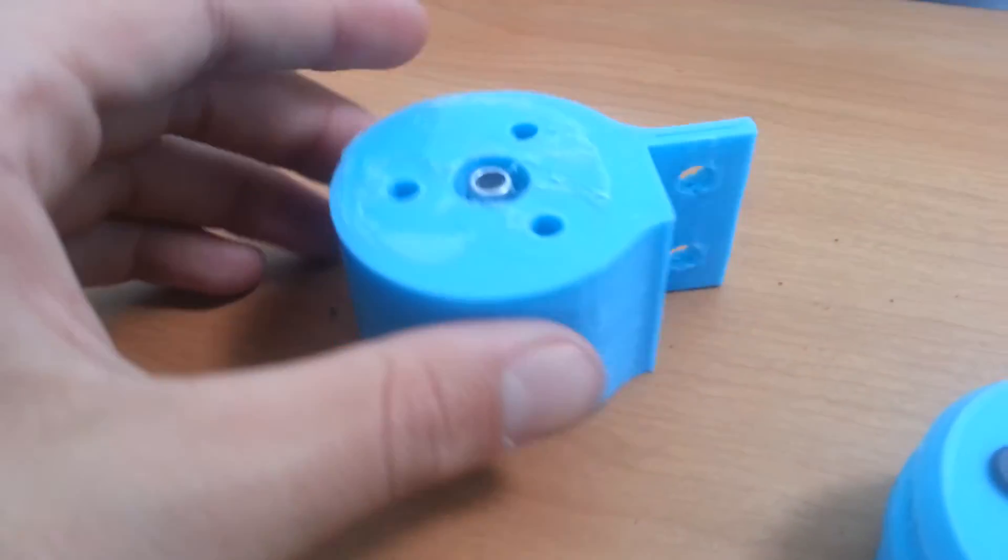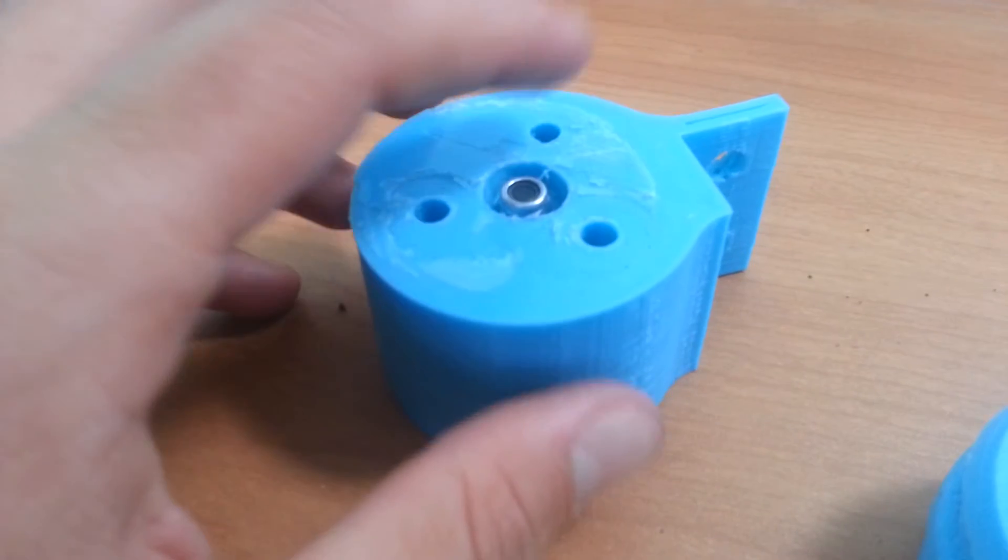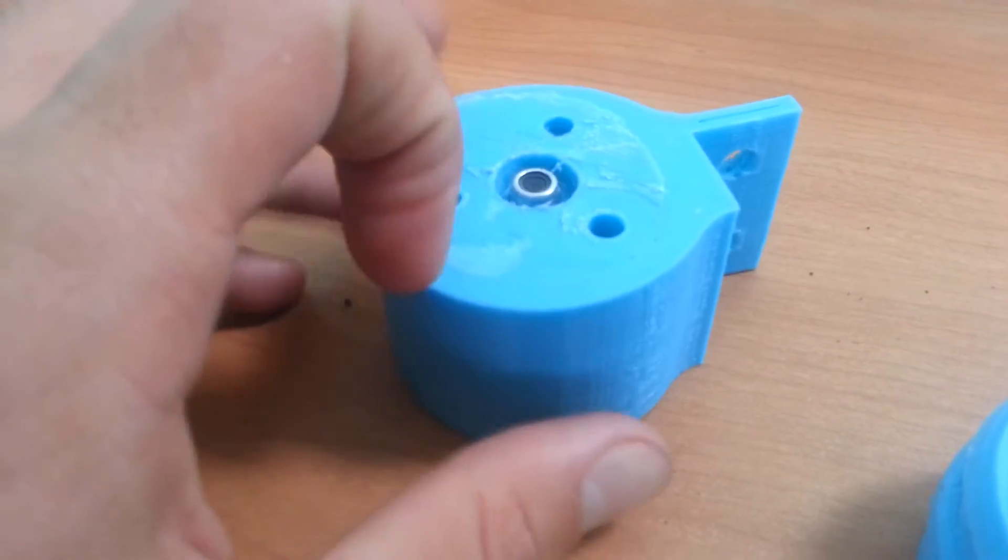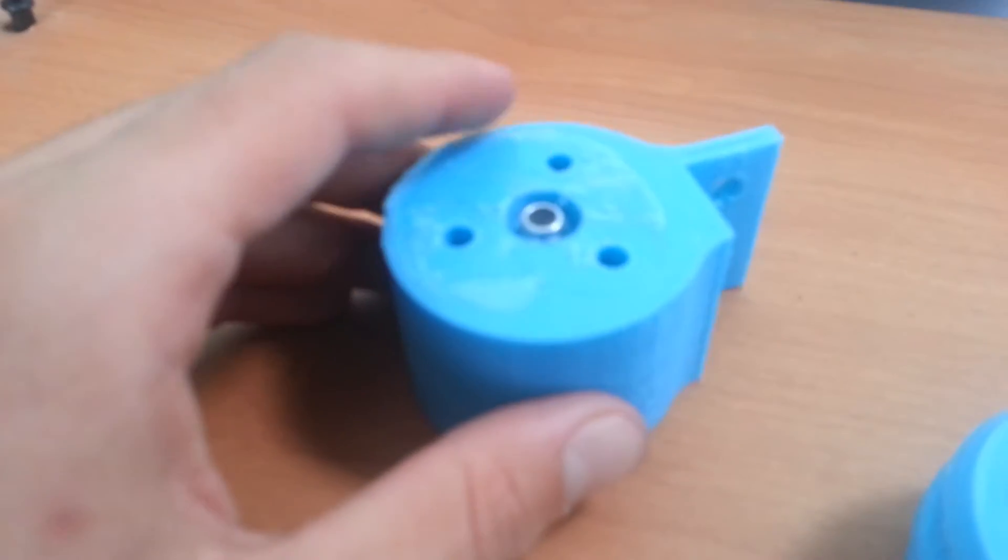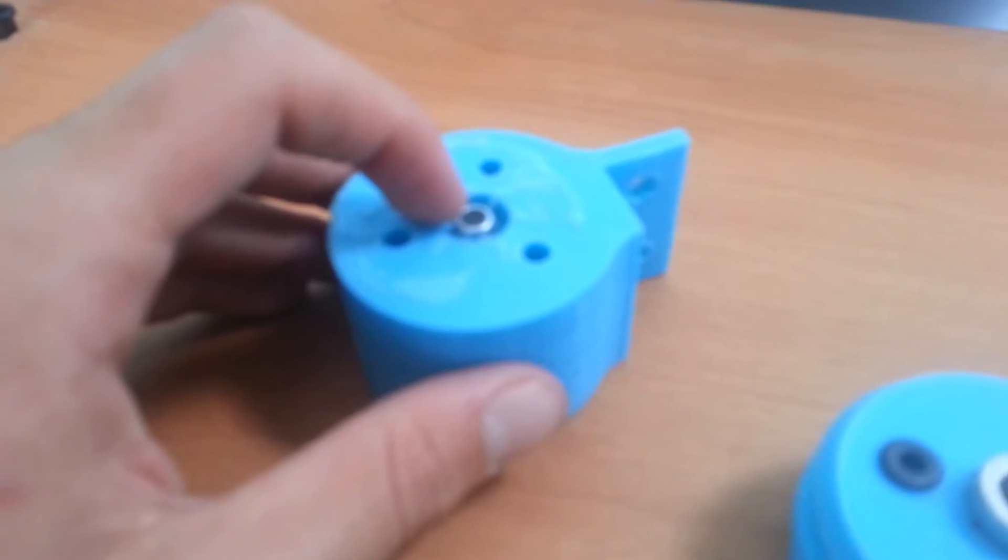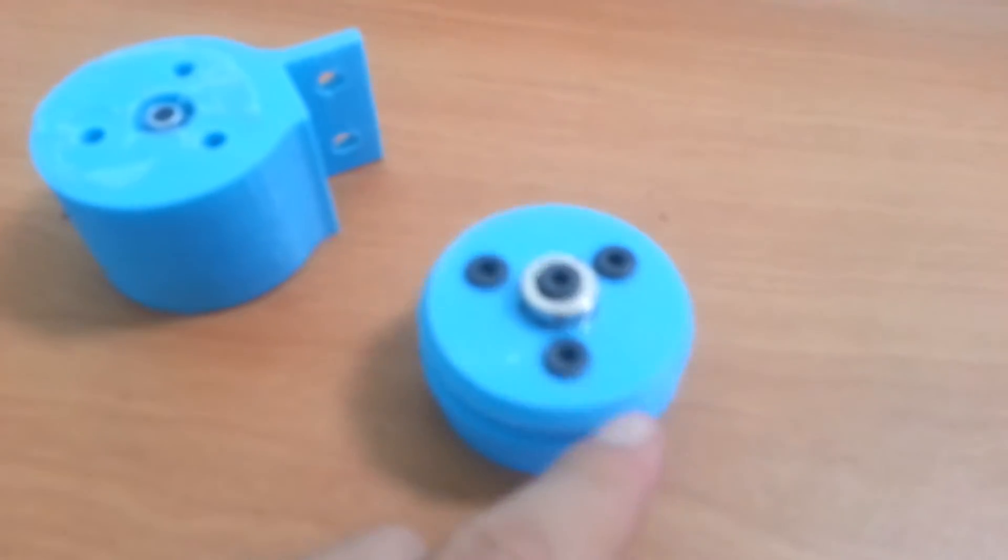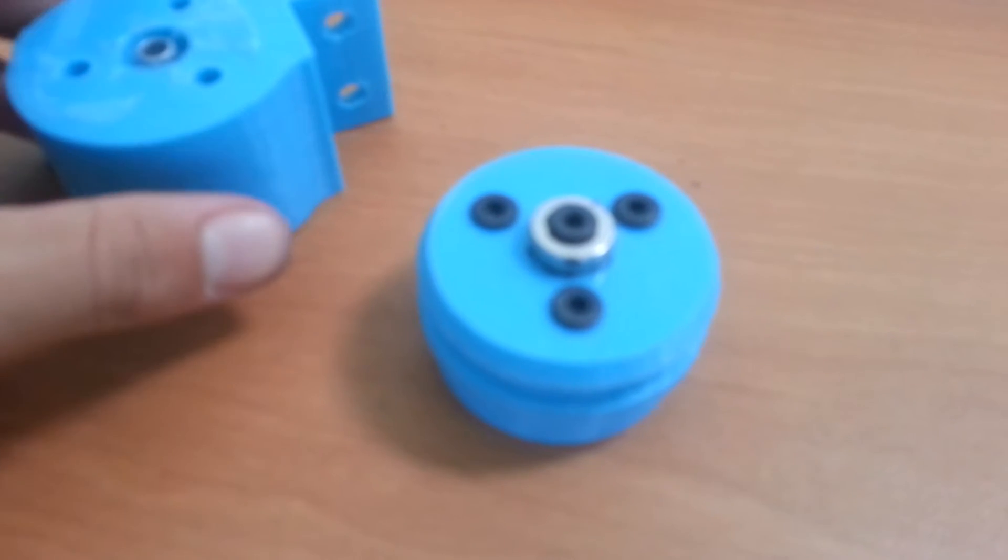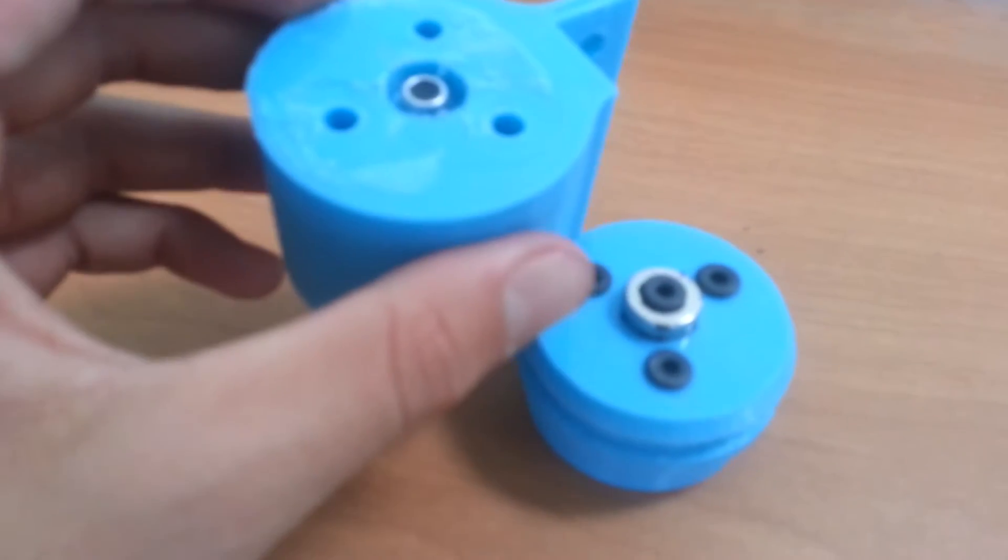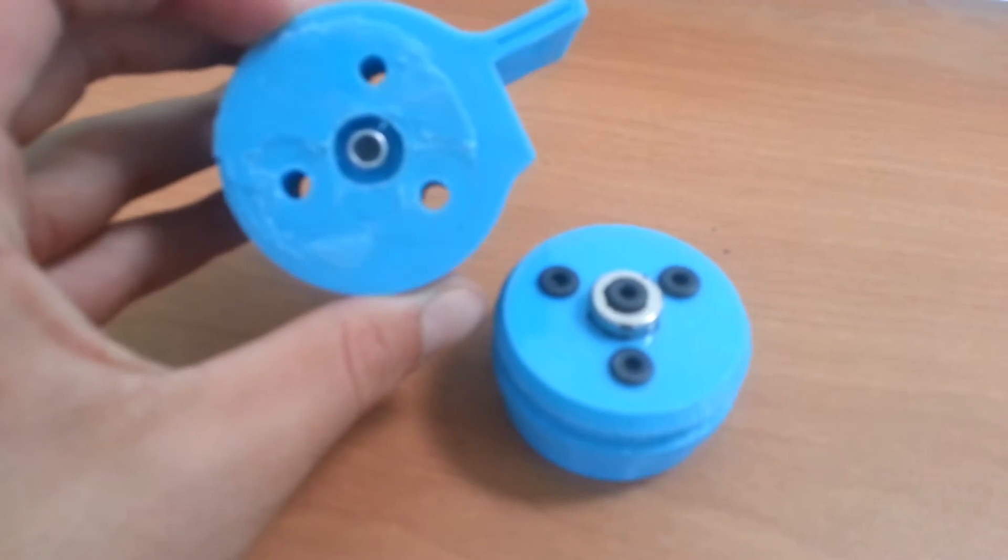And then what we had was these four screws or four holes that would have screws in them to pass electrical power and data through from the tool mount to the tool. You can see that those are aligned in different formations.